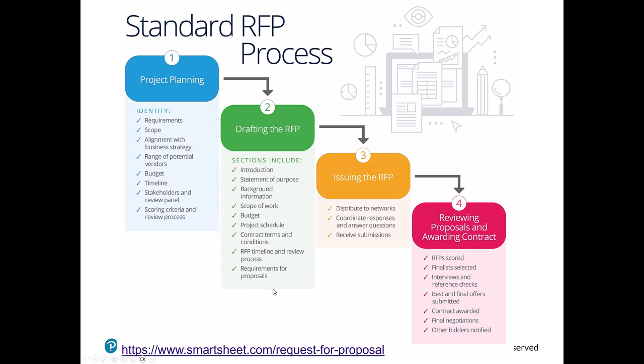The RFP has many different sections. You start with a basic introduction: what are you looking for, who are you, your statement of purpose, and goals for the system. Background information includes a bit about the company, what industry you're in, and how large you are. Scope of work is important because you might ask for different levels of activity — some vendors you just want the software; other times you want the vendor to quote software plus installation, configuration, customization, and end-user training, and possibly ongoing vendor support.